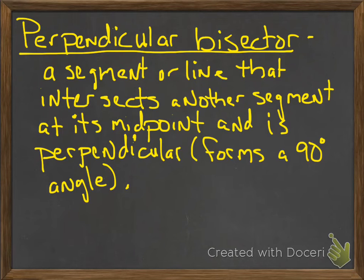So what is a bisector? Well, let's don't forget. Bisector is something that cuts into equal halves. A perpendicular bisector is a segment or line that intersects another segment at its midpoint and is perpendicular to that. In other words, it forms a 90 degree angle. So not only would it be cutting the segment into two equal halves, it would also form a 90 degree angle when it does that.